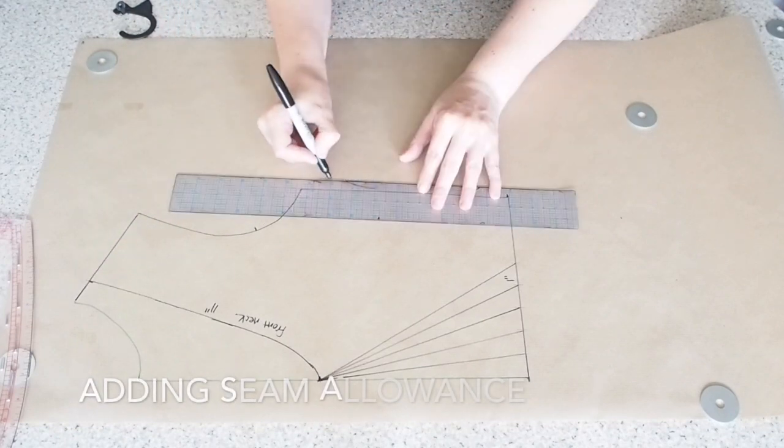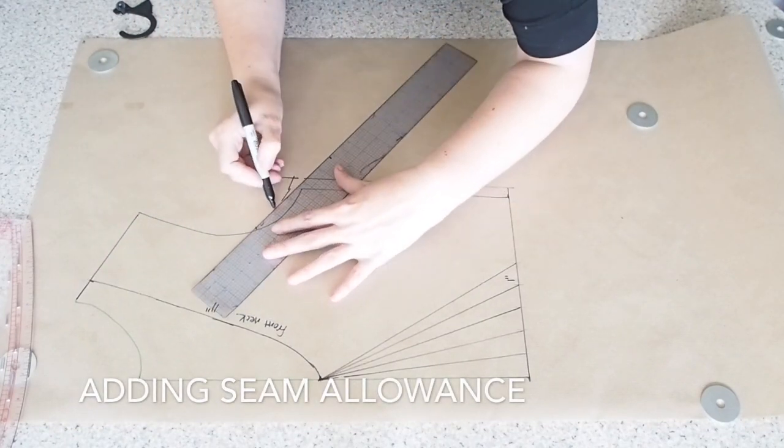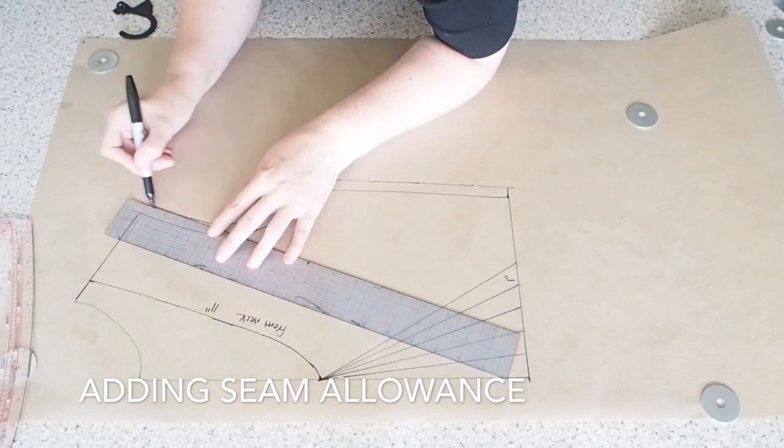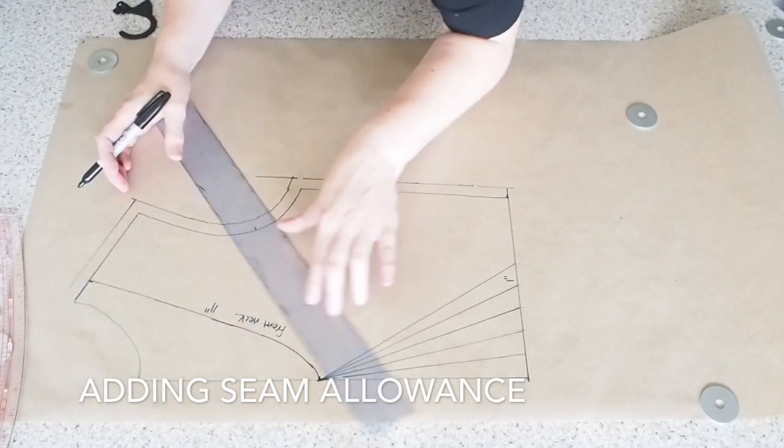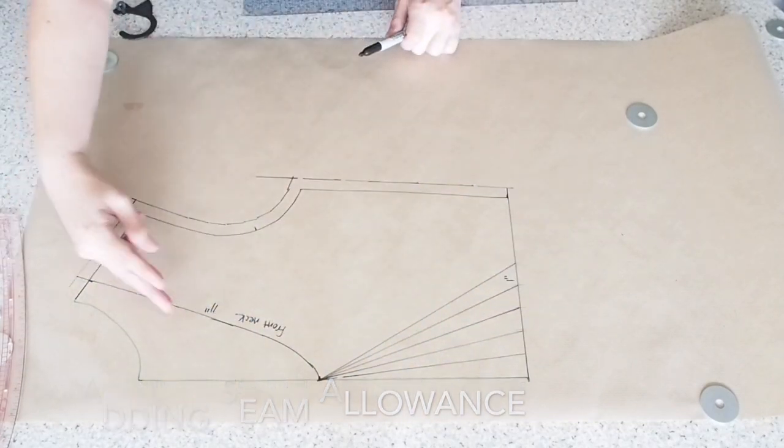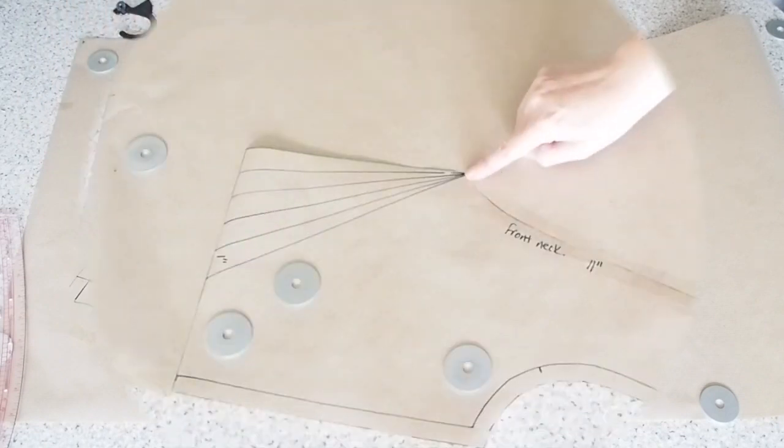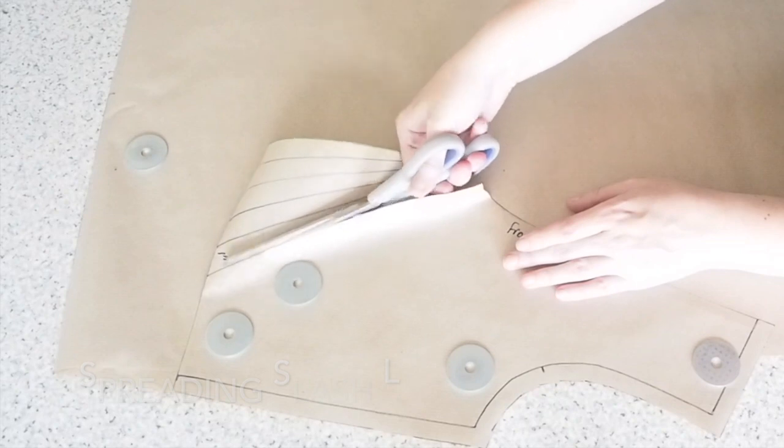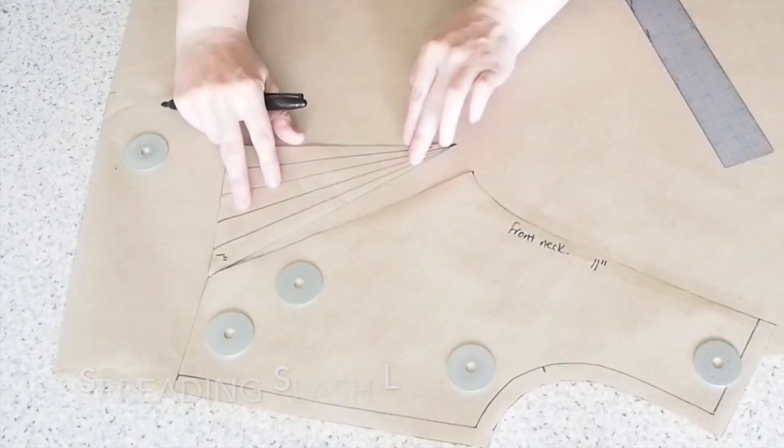I'm going to spread those slash lines in a second. But before I do that I just want to add some seam allowance. So along the side seam, around the arm, and across the shoulder. And now just to separate the old neckline from this nice new pattern piece. And I've just stuck that new pattern piece onto some fresh paper.